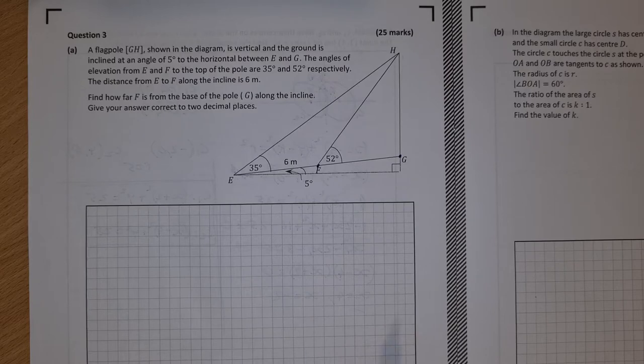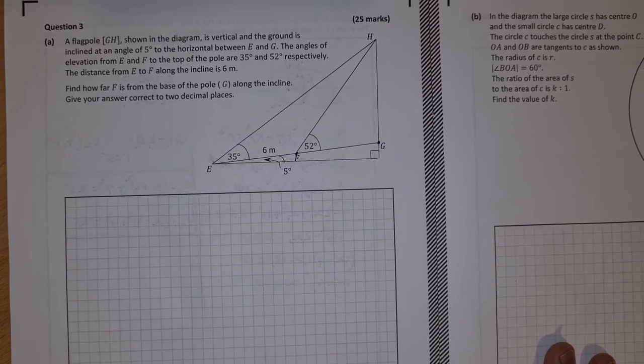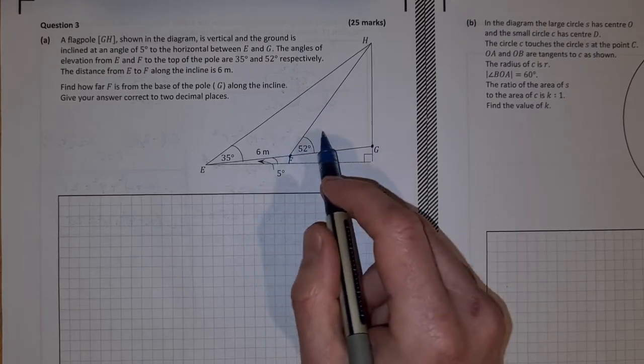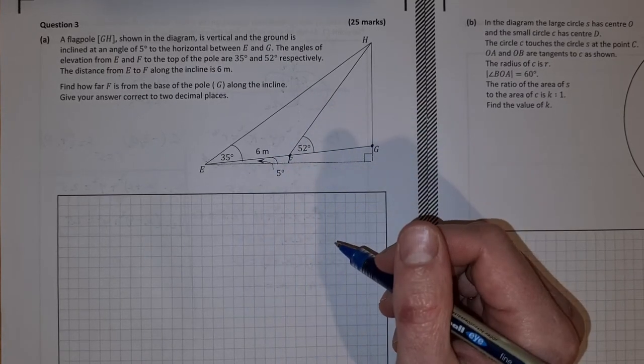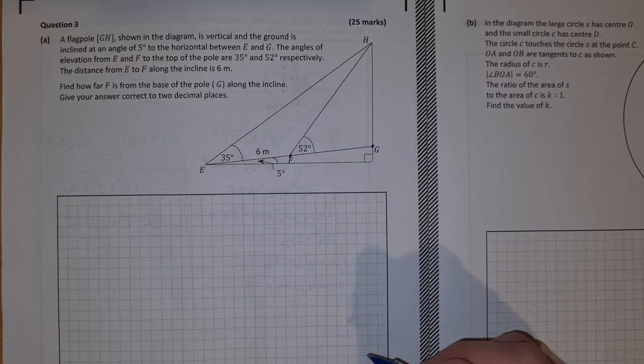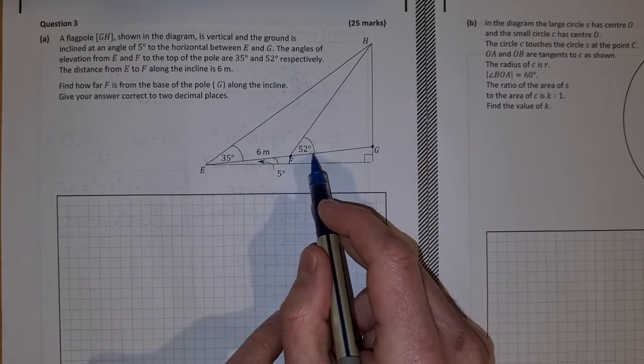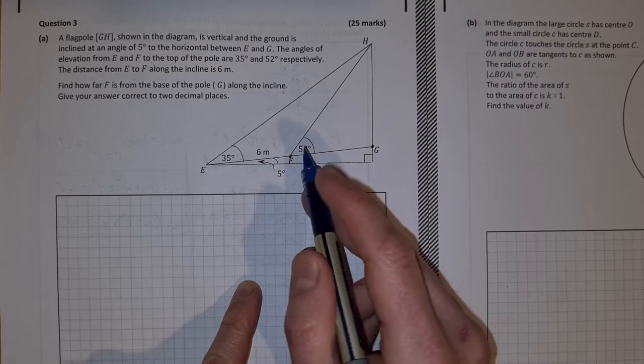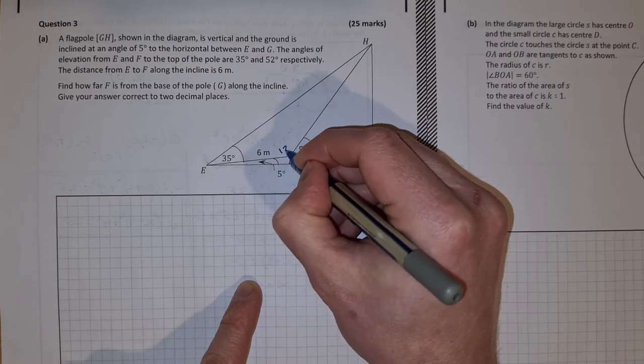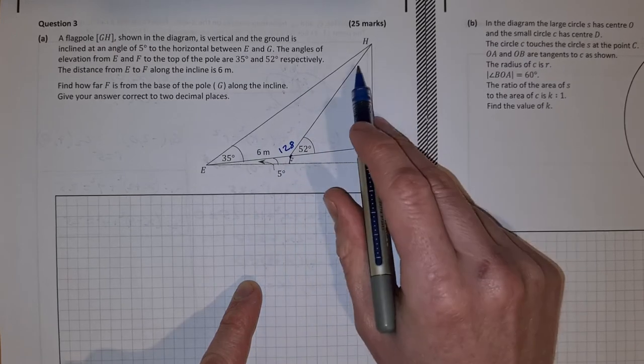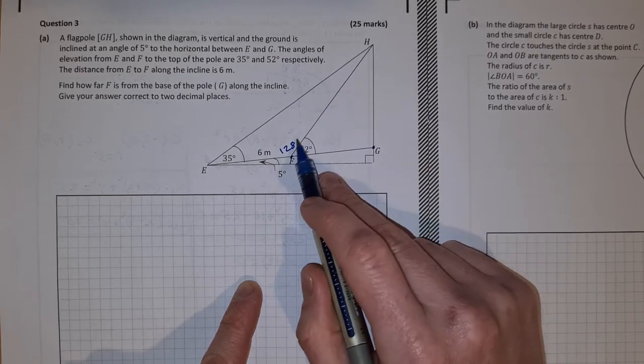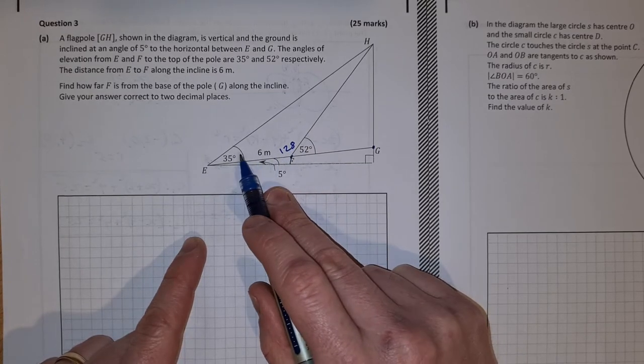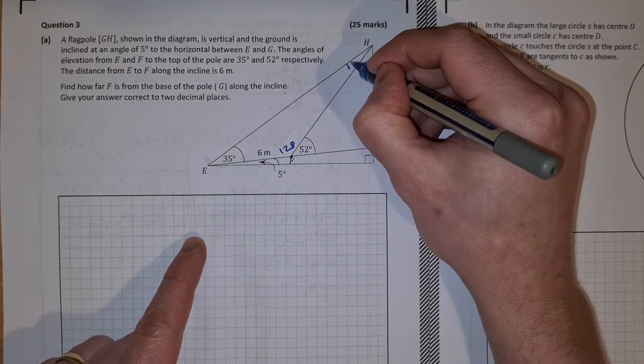To do this, I'm going to first of all fill in some angles that I can figure out fairly easily here. I can see here I have a straight angle, 52 degrees here, that means I have 128 degrees left over here. Then up here I'll have 128 plus 35, if I take both of them from 180, I'm left with 17 up there.